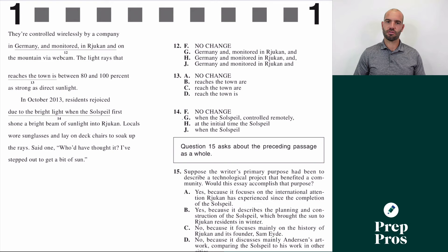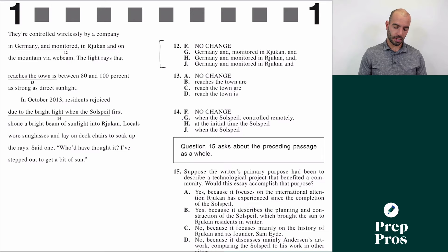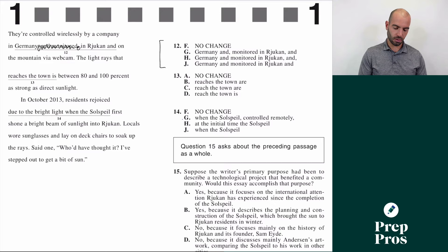It's where you separate information that we can remove from the sentence. In a question like 12, where we have all the same words and lots of commas, use the crossing-out trick. Information that is unnecessary we have to be able to cross out from the sentence. So if we look at how it's written right now: "they're controlled wirelessly by a company in Germany and monitored in Rukjan and on the mountain via webcam." The two commas here make it look like I can cross this off — but if I say "they're controlled wirelessly by a company in Germany and Rukjan," that doesn't make sense.